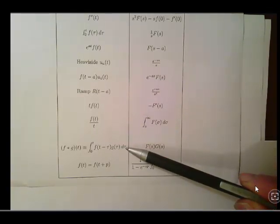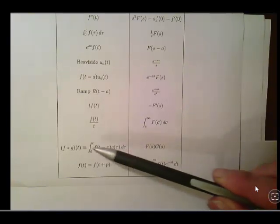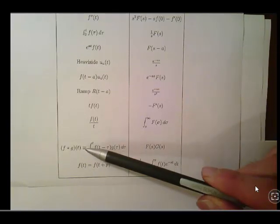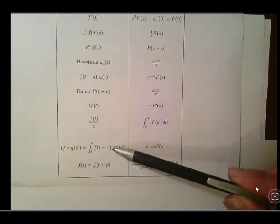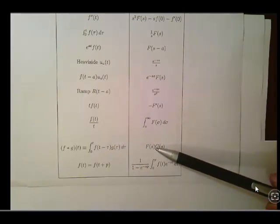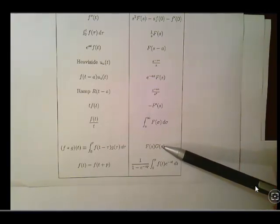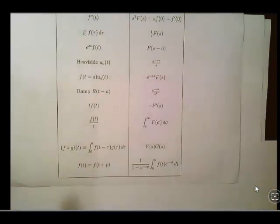It could be a function of Tau or U or something else. But essentially the Laplace transform of this convolution, which is comprised of two components, is the Laplace transform of one component multiplied by the Laplace transform of the other component. That's all you have to remember.